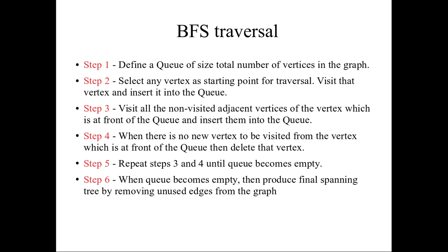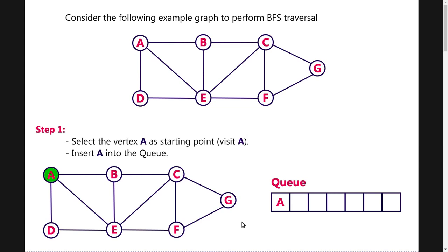Now I will show you one example so that you will understand. Consider this example which has 7 nodes — we will do the BFS traversal on this graph. First step: I have told you that we have to select the starting vertex. Here I am choosing vertex A as the starting vertex — it is your choice, you can choose any vertex. I have chosen A and inserted it into the queue.